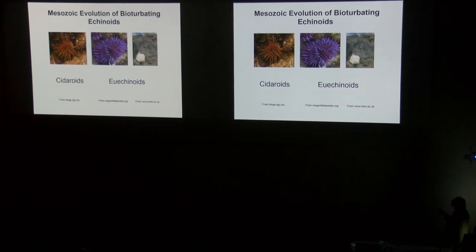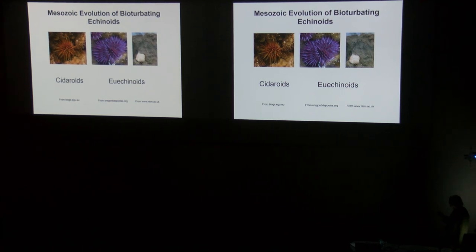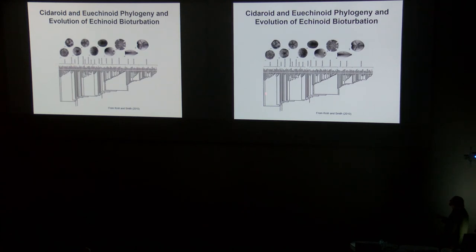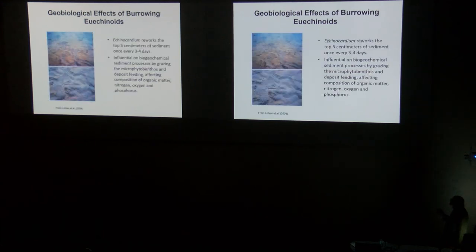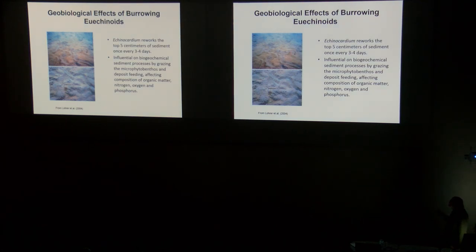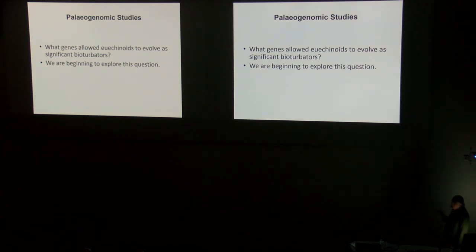One last example: the evolution of bioturbation for echinoids in the Mesozoic, where the crown group subclasses are cidaroids and euechinoids. The cidaroids don't change very much, but the euechinoids have a wide diversity, and bioturbating euechinoids have a huge effect on the geobiology of surface sediments, as summarized in a study from New Zealand. We are currently working on exactly what genes and GRNs in echinoids are responsible for this change.